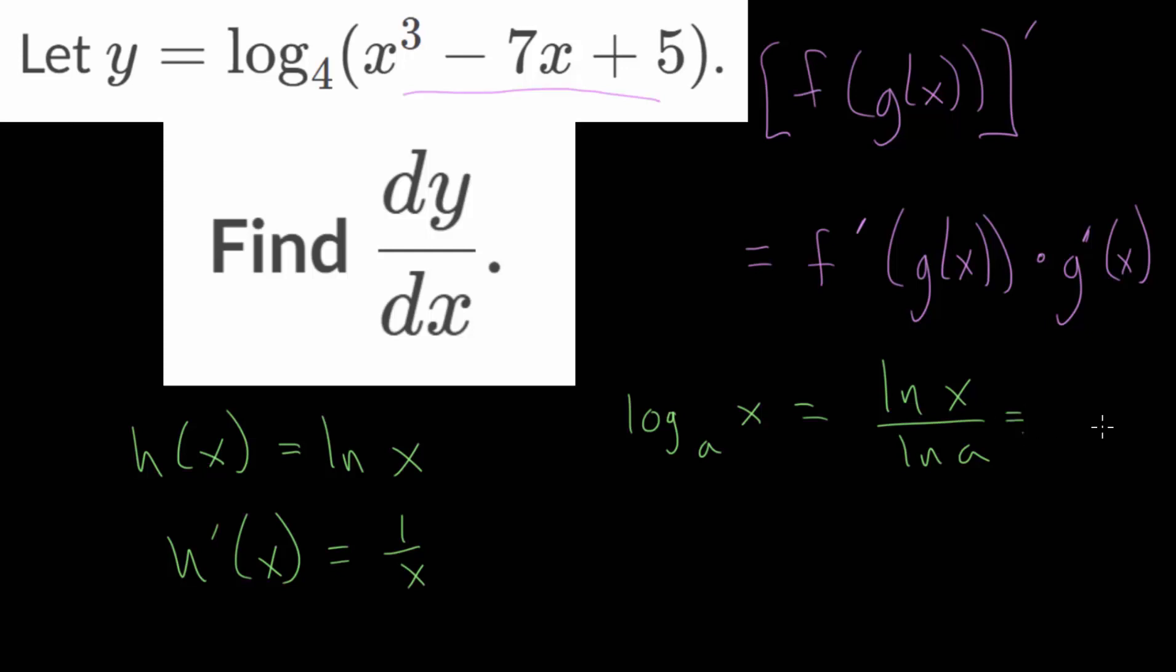And essentially, we can just factor out that natural log of a, and then we, again, have this natural log function. It's just now multiplied by 1 over the natural log of a. So let's say this is its own function. We can call it maybe m of x.